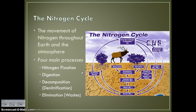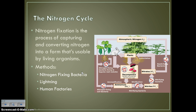There are four main processes under the nitrogen cycle: nitrogen fixation, digestion, decomposition or denitrification, and elimination or waste. Nitrogen fixation is the process of capturing and converting nitrogen into a form that's usable by living animals — taking the atmospheric nitrogen and fixing it into a form that can be used by plants and animals. There are three methods of nitrogen fixation: bacteria that are capable of fixing nitrogen, the energy of lightning, and factories where humans are capable of fixing nitrogen, though that is a very expensive manner.